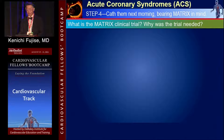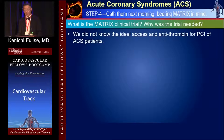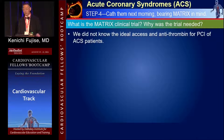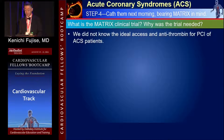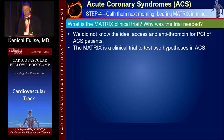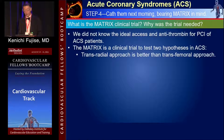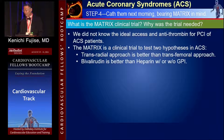What is the MATRIX clinical trial and why was it needed? Because at that time we didn't know the ideal access — transfemoral or transradial — and also the best antithrombin, either heparin or bivalirudin, for PCI procedures in ACS patients. MATRIX is a clinical trial testing two discrete hypotheses: one, transradial approach is better than transfemoral approach; and two, bivalirudin is better than heparin, either with or without GPI.